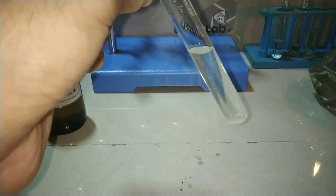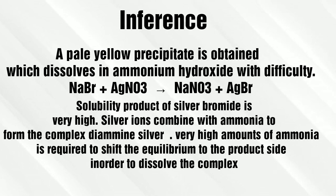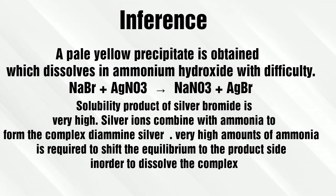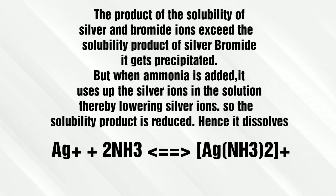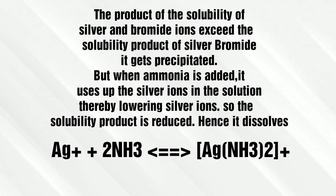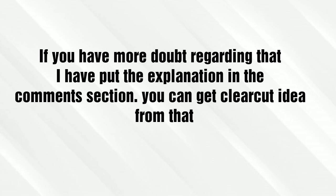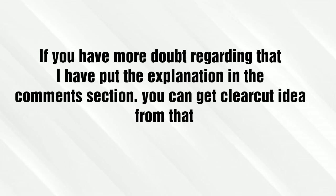Silver nitrate reacted with bromide to produce silver bromide, which is not easily soluble in ammonium hydroxide due to the high solubility product of silver bromide. When the concentration of the anion and cation in solution exceeds the specific solubility product, the substance precipitates. Here, diamine silver complex was produced, consuming silver ions in the solution and thereby reducing the solubility product of silver bromide.